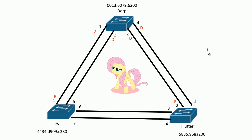Now after finding the root bridge and the root ports, let's find the designated ports. It's pretty straightforward — the same rules follow. To find all the designated ports, we find the lowest cost to the root bridge. Let's do it link by link. So let's take this link between twine and flutter — port seven on twine and port four on flutter.